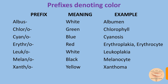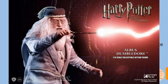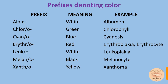'Albus' means white; an example is albumin. If you remember the character Albus Dumbledore from Harry Potter — why was he named Albus? Because he was white and all his hair and beard were also white. The prefix 'chloro' means green, as in chlorophyll. 'Cyano' means blue, as in cyanosis.